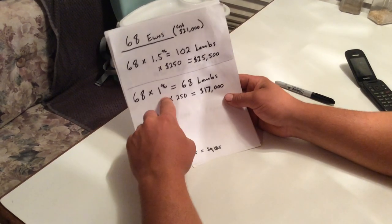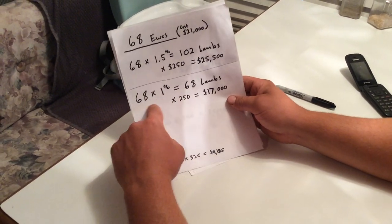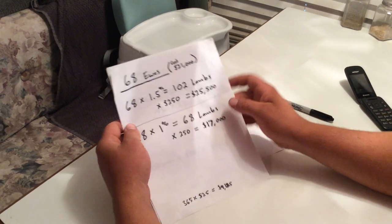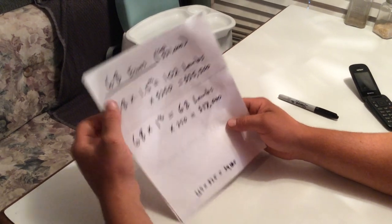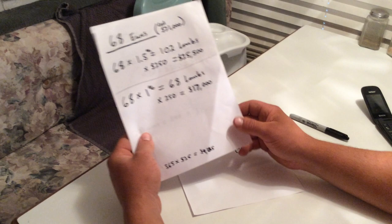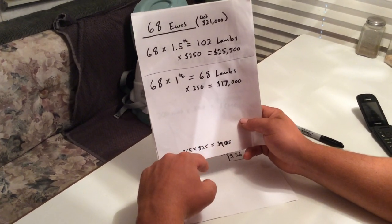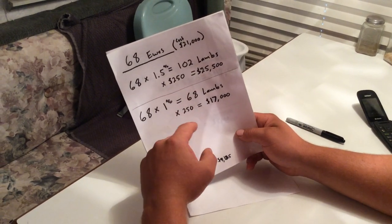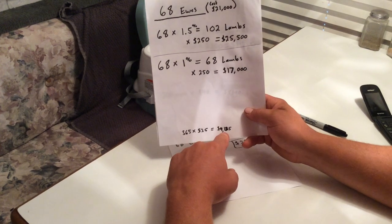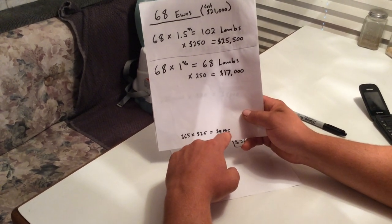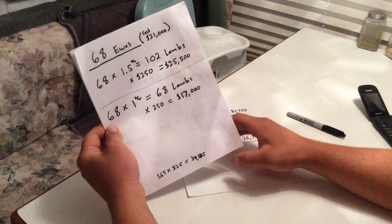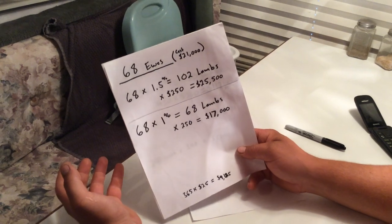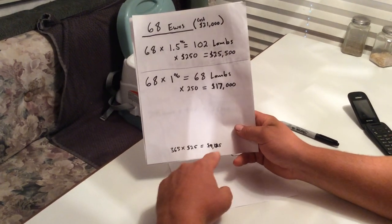So, and then here's another, if we only get, if each ewe only averages one lamb, we'd end up with about $17,000. Which really isn't bad at all, considering these ewes would go on to produce a lot more lambs. And then just a little number down here. If chores take me about an hour a day, so it's a little over $9,000 a year at $25 an hour just to take care of these 68. And the efficiencies of scale are enormous. I mean, I could take care of 200 and it would hardly take me any more time.